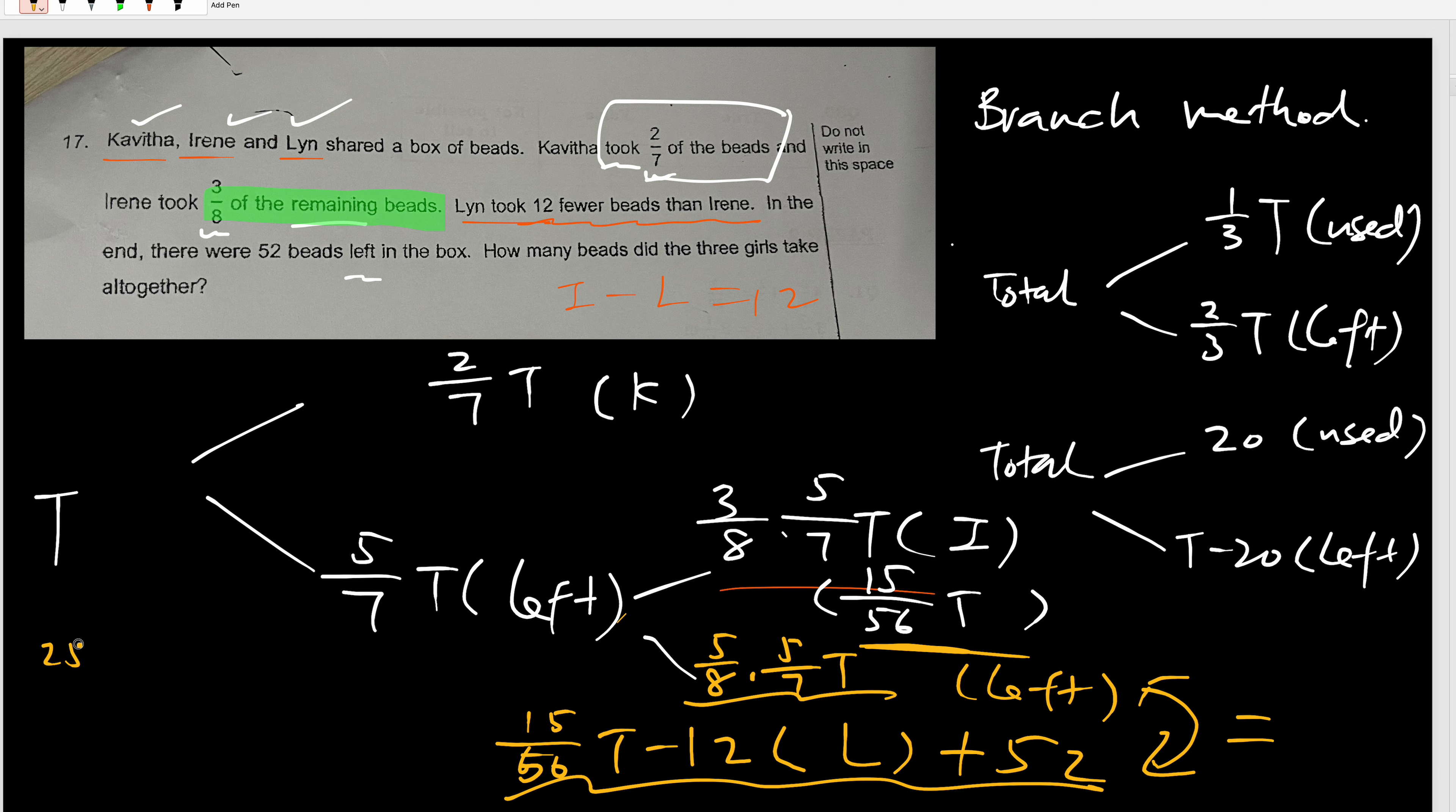So I'm going to equate it. So this is 25/56 T is equal to everything here. So this one minus 12 plus 52. These two add up is 40. So basically, this is equal to 15/56 T plus 40. And 40 will be equal to this one minus this one. And this happened to be 10/56. So please organize your space next time. So I'm going to use next page. 10/56 T equal to 40.